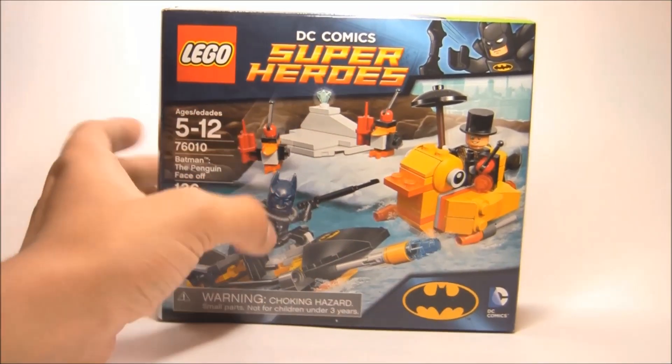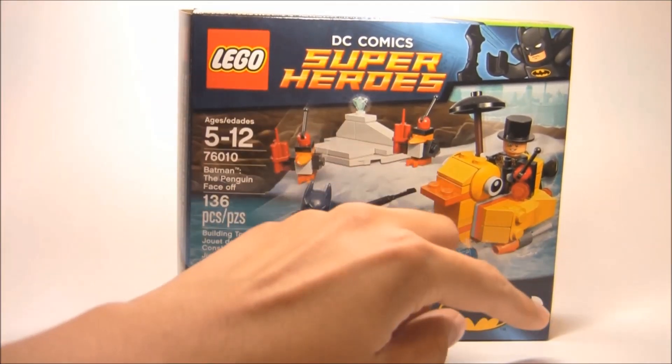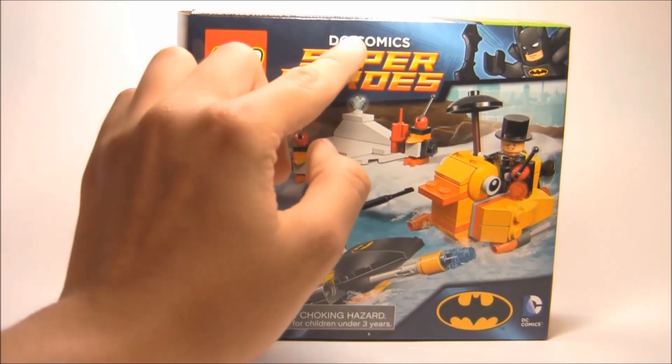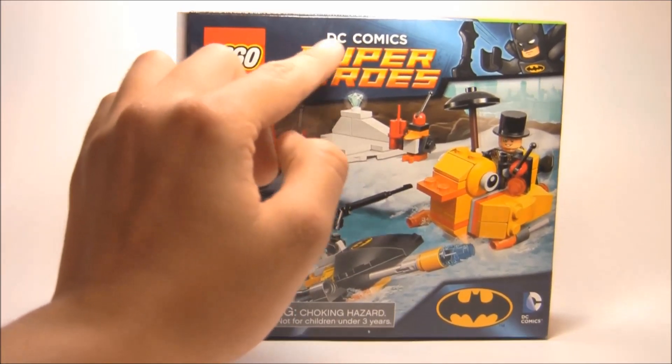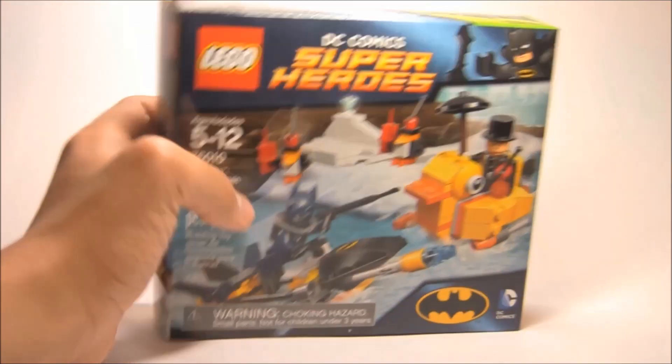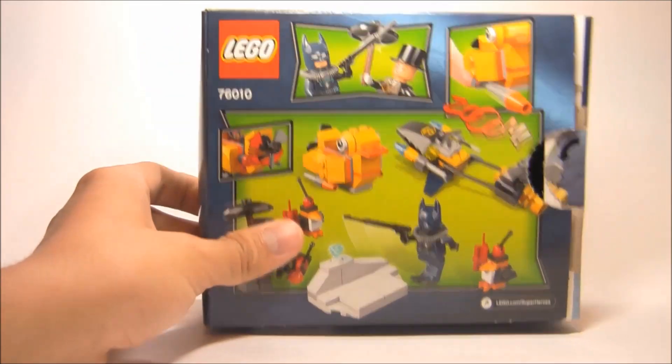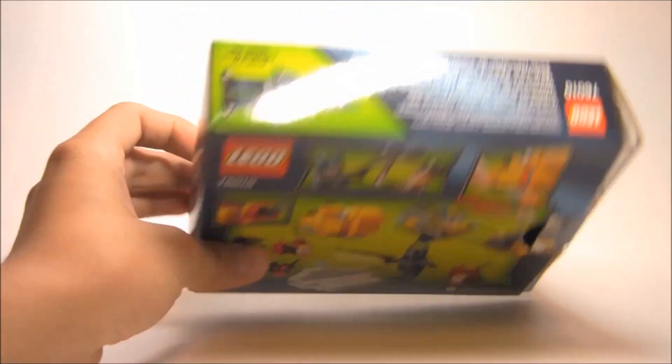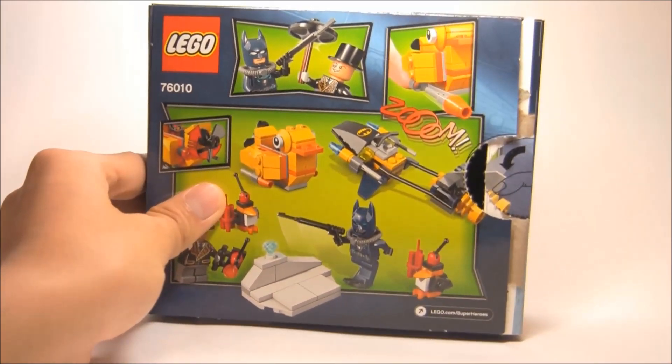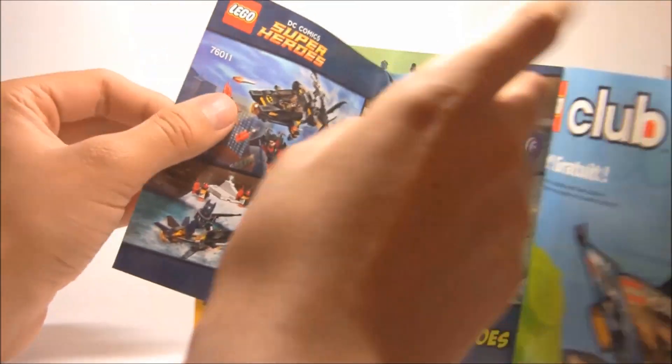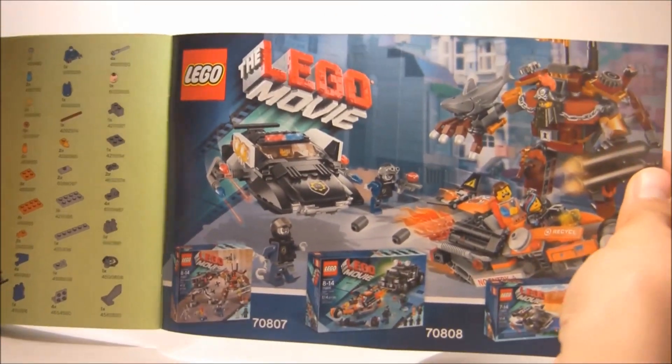They have the little DC Comics logo on the bottom which is the only annoying part. On the back it shows all the little play features. This green design has grown on me a little bit. There is an instruction booklet but no comic, and they show advertisements for Batman sets and Lego movie sets.